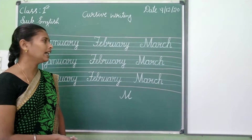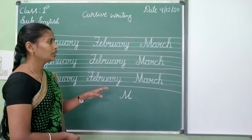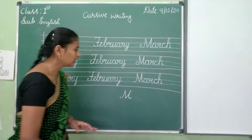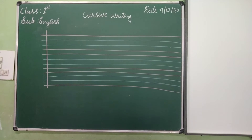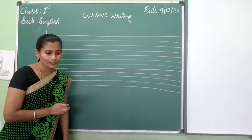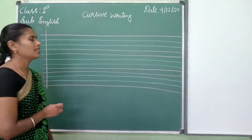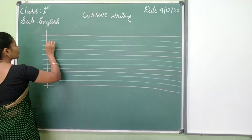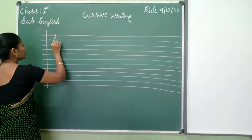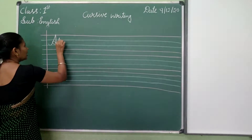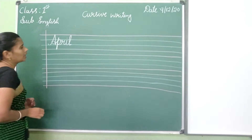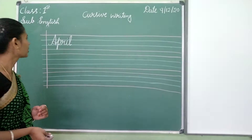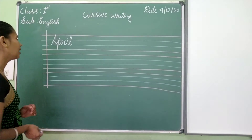Next April, May and June. I will show how to write April, May and June. Next word is April, the next month after March. April. A, P, R, I, L. April. A, P, R, I, L. What is it? A, P, R, I, L. April.